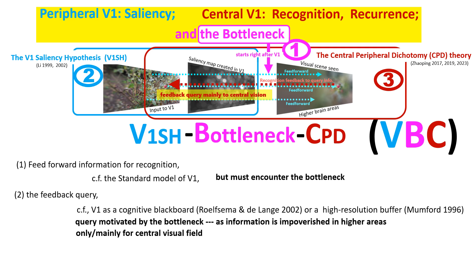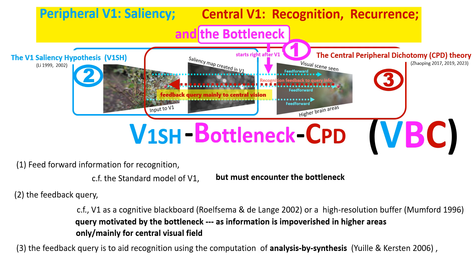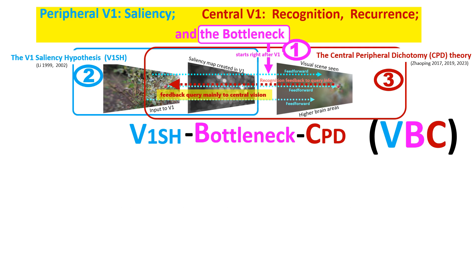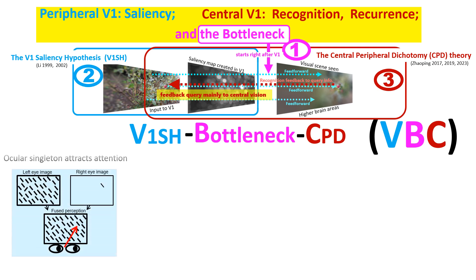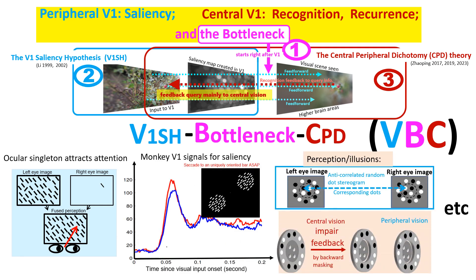Additionally, this feedback query is only or mainly for the central visual field. The feedback is to query for additional information through the bottleneck in order to help the particular ongoing recognition using the algorithm of analysis by synthesis — this feedback is not for predictive coding. This framework has provided highly non-trivial and falsifiable predictions, some of which are already confirmed by data. Current and additional predictions provide further opportunities to falsify or revise this framework. So far, it has withstood the substantial test of time.